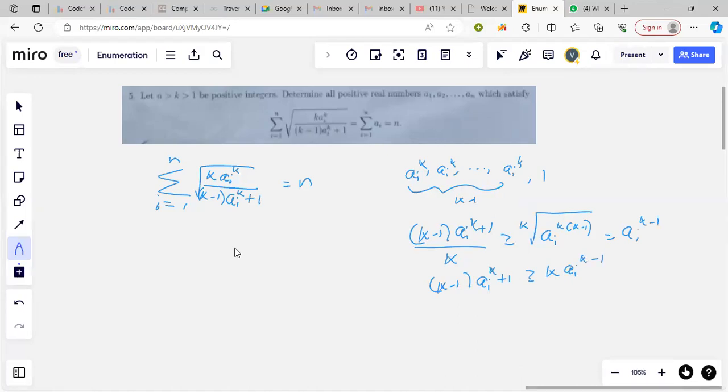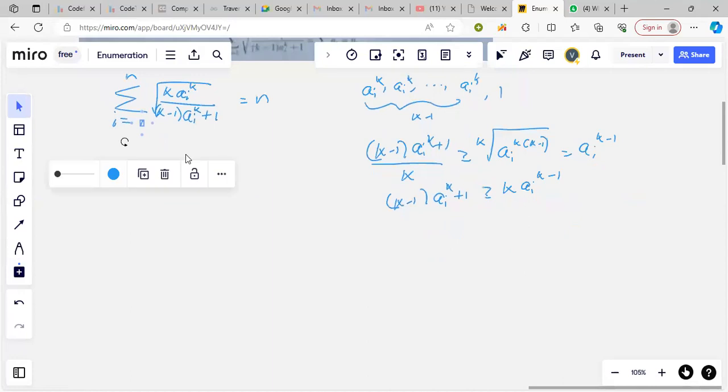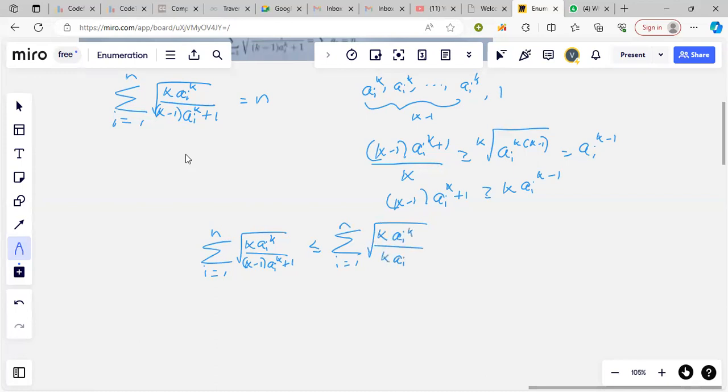Using this, what we get is this summation where root of a i to the k by k minus 1, a i to the k plus 1, is at least—because of this inequality—sigma i going from 1 to n, square root of k, a i to the k upon k, a i to the k minus 1.